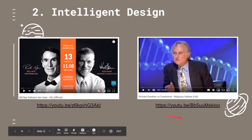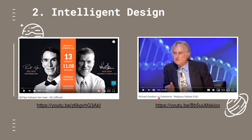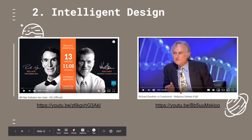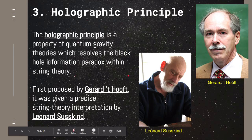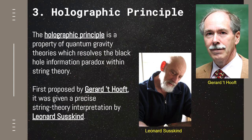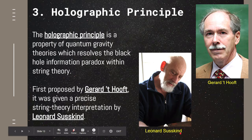And here, one of my favorite biologists, Richard Dawkins, wherein he had a debate with other creationists. This is found on YouTube and I will provide the link in the description below. The next alternative theory is the holographic principle. It says that it is a property of quantum gravity theories which resolves the black hole information paradox within string theory. This was first proposed by Gerard Hooft and it was given a more precise string theory interpretation by Leonard Susskind.